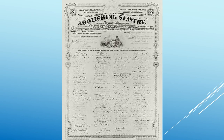The 13th Amendment, ratified in 1865, abolished slavery. The 14th Amendment, adopted in 1868, was to protect the civil rights of former slaves — it granted citizenship to all people born in the United States. And then two years after that, the 15th Amendment declared that the right to vote shall not be abridged on account of race or previous conditions of servitude.